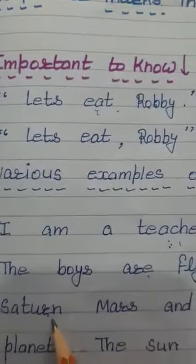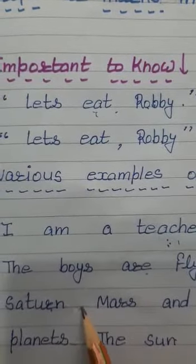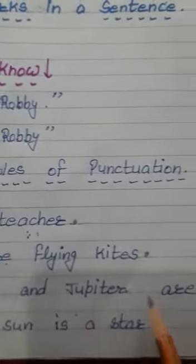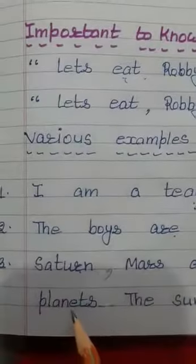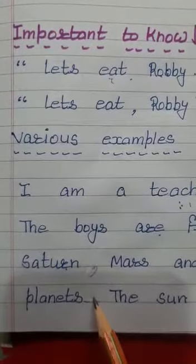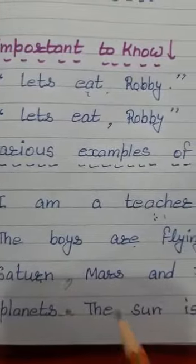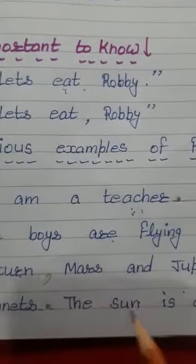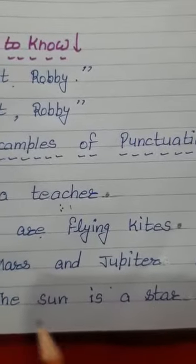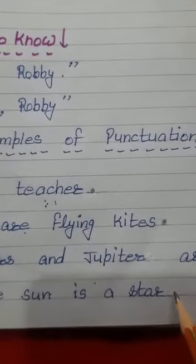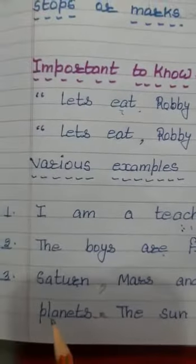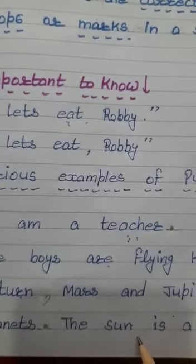Now we see that Saturn and Mars — we will put a comma here: 'Saturn, Mars and Jupiter are planets.' So the sentence is ending here and we will put a full stop. Now after the full stop the second sentence begins: 'The sun is a star.' By adding a full stop here we are giving a complete and meaningful sense to these sentences.